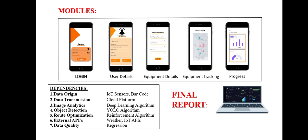We track items by GPS, RFID, and work code dependencies. Data is obtained from IoT sensors and sent to the cloud platform. We detect objects using the YOLO (You Only Look Once) algorithm, and image analytics is also done using deep learning concepts. For route optimization, we use a reinforcement learning algorithm.